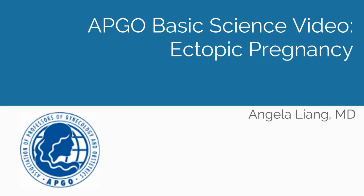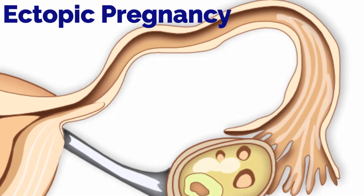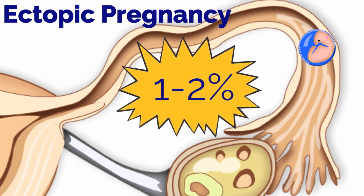APCO Basic Science Video Topic: Ectopic Pregnancy. Ectopic pregnancies are pregnancies abnormally implanted outside of the endometrial lining of the uterine cavity. The reported incidence of ectopic pregnancy is between 1-2% and remains one of the leading causes of early pregnancy-related death.